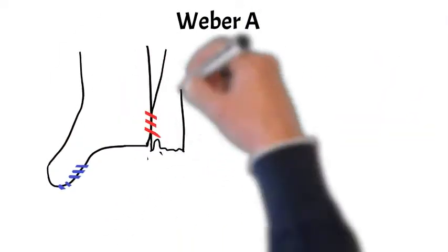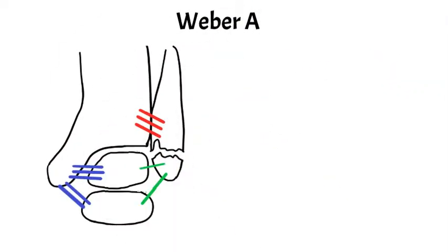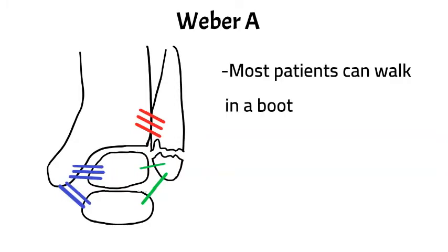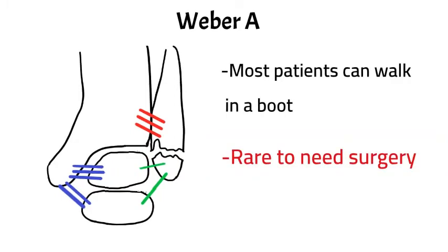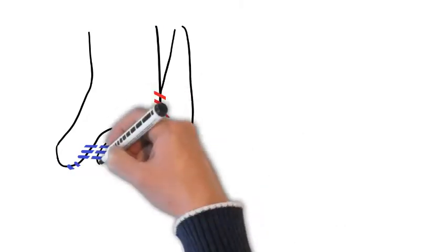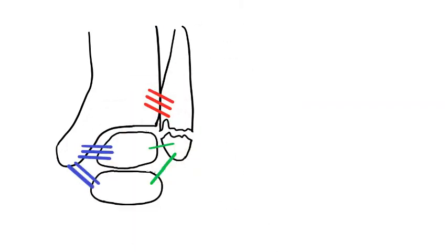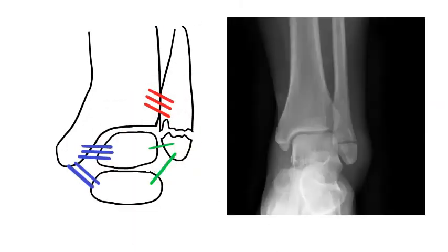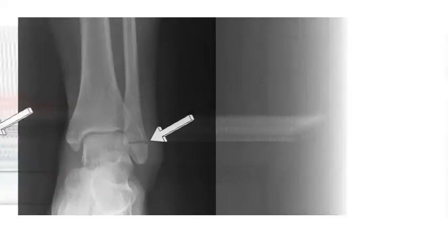A Weber A fracture occurs below the level of the syndesmosis — below those red lines, which are ligaments. Most patients can walk in a boot with these fractures; they very rarely need surgery. Usually you'll be in a boot for about six weeks, but I'd recommend you see your doctor for advice. On the x-ray on the right, you can see the fracture is below the level of the joint, marked by the arrow. This is the type of fibular fracture you would rather have — it very rarely requires surgery.